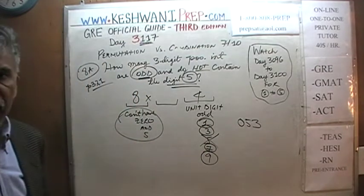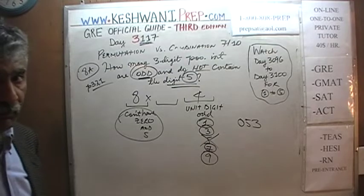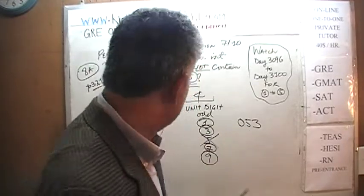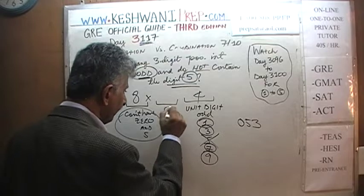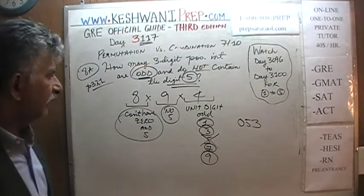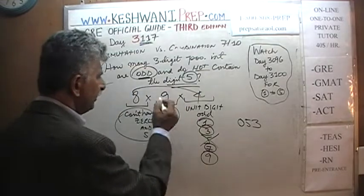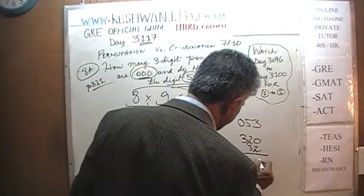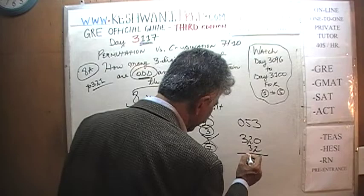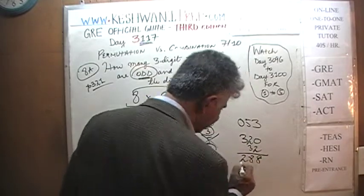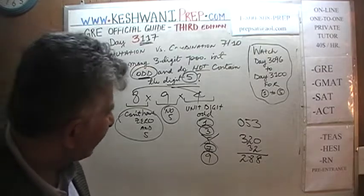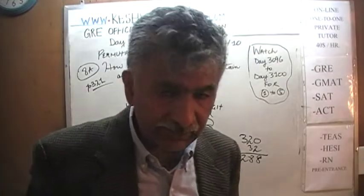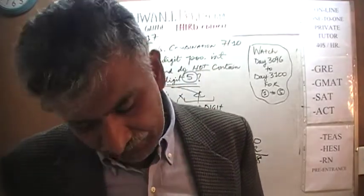How many different ways can we fill up the middle spot? Well, typically there are ten digits, zero through nine, but we can't have five. Which means there are only nine choices. The answer is 8 times 4 times 9, which equals 288. So there are 288 different three-digit positive integers that happen to be odd and do not contain the digit 5.